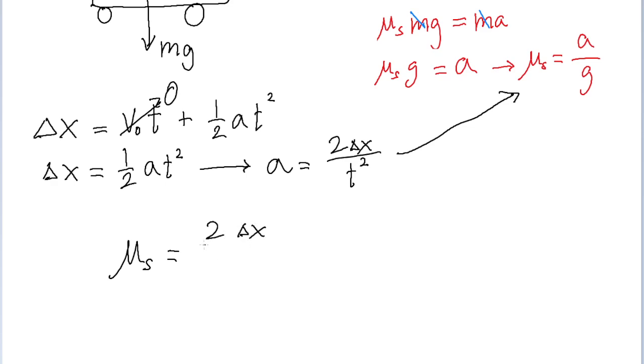So the coefficient of static friction is 2 times the displacement divided by g multiplied by the time squared.